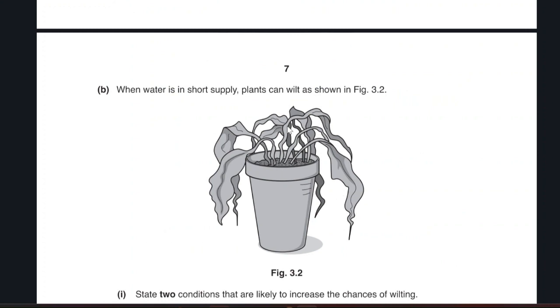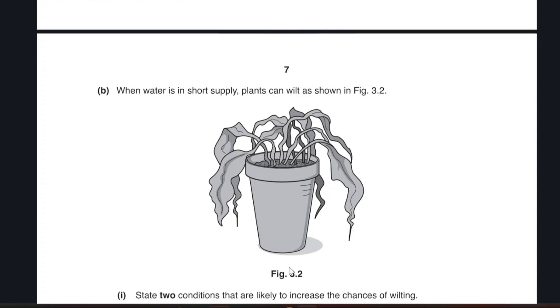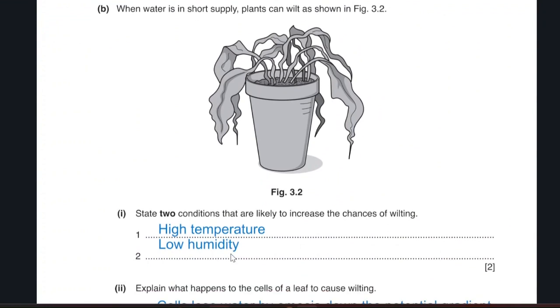When water is in short supply, plants will wilt. What are the two conditions that are likely, more likely to increase the chances of wilting? Conditions that increases the chances of wilting. Anything that increases transpiration, meaning increases the loss of water from the leaves, will increase the chance of wilting. I can say high temperature, high wind, high light intensity, low humidity. Already he said that there is no water. I want two other chances of wilting. High temperature, low humidity.